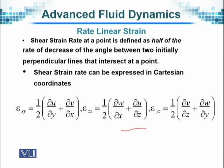The third shear strain rate component is half of the partial derivative of V with respect to Z plus the partial derivative of W with respect to Y. These are the three shear strain rate components in the X, Y, Z directions in Cartesian (rectangular) coordinates.